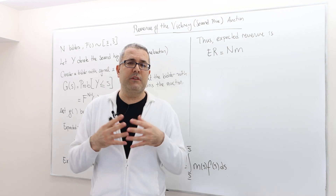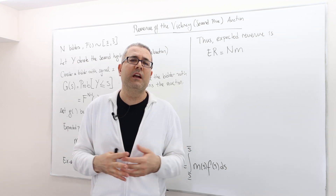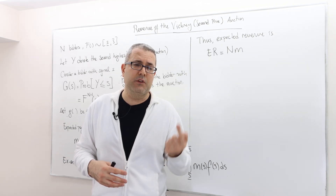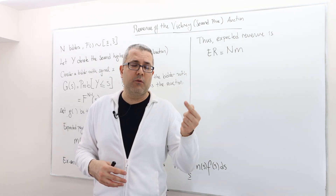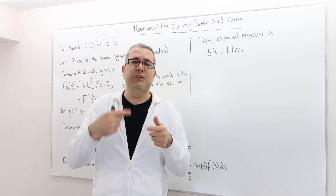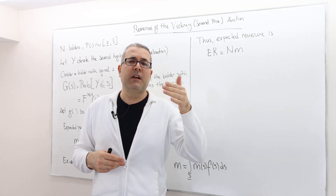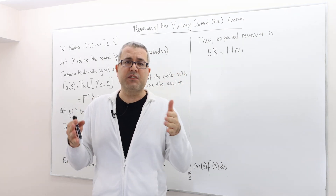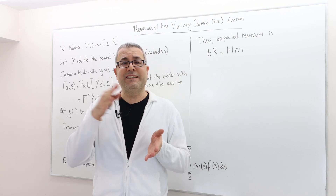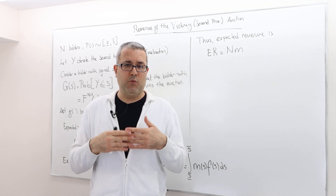Expected revenue: remember, the seller is the one selling a single object to potentially N many bidders, and only one of those bidders is going to buy this good. So all he's going to do is pay a price — in the second price auction, he's going to pay the second highest bid. That means the winner's payment is the seller's revenue. So all we have to do is calculate the bidder's bid, but obviously this is going to be an expected term.